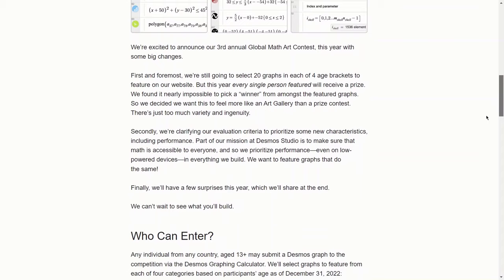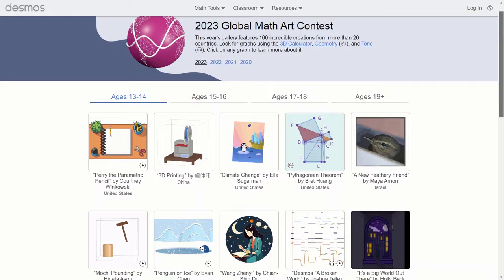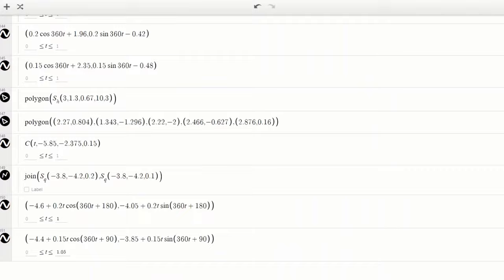Finalists receive prizes and are chosen across four different age categories, as well as having their graphs be featured on the Desmos homepage. For the past three years, I've made a submission to each of the contests, and they're some of the biggest projects I've undertaken.